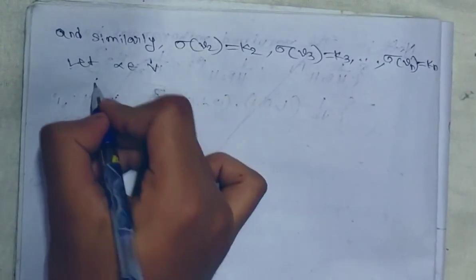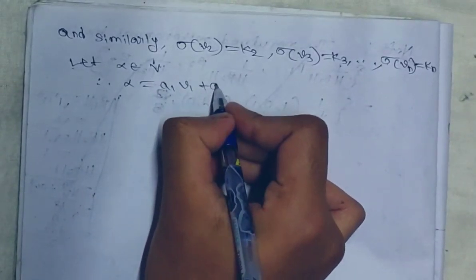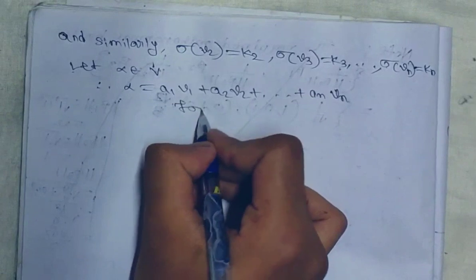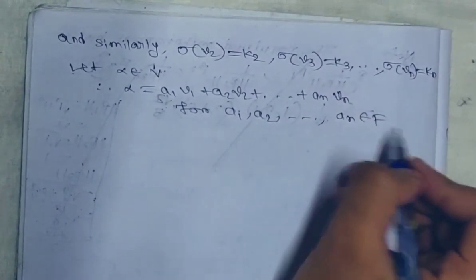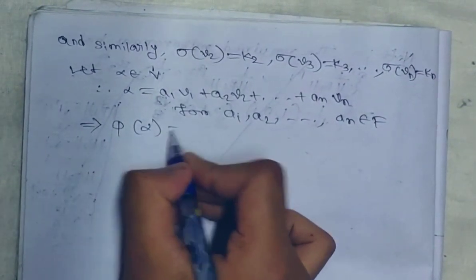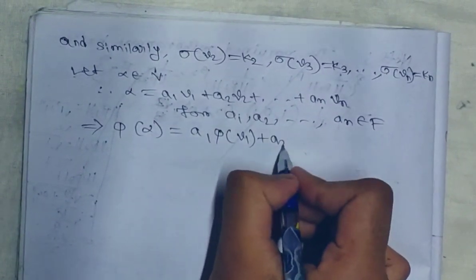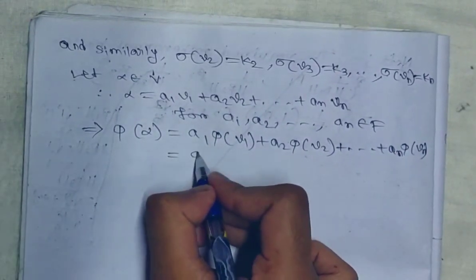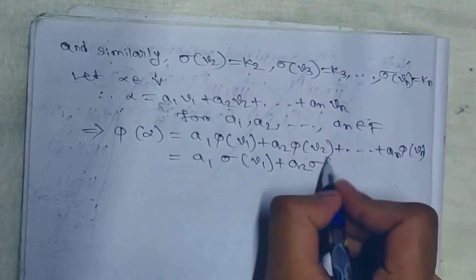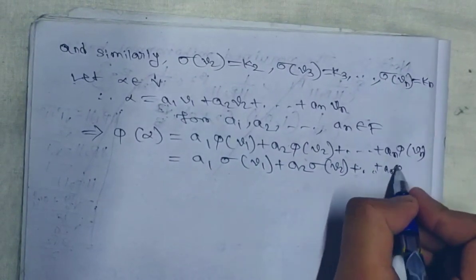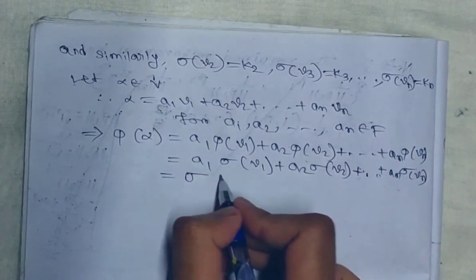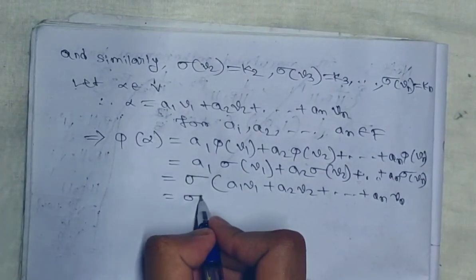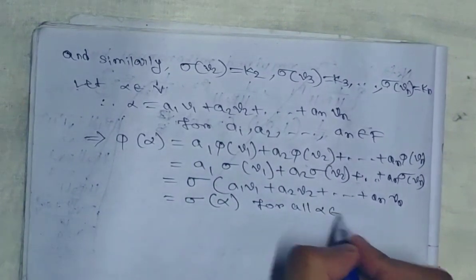Now let α belong to V. Therefore α = a1·V1 + a2·V2 + ... + an·Vn, for a1, a2, ..., an belonging to field F. That implies φ(α) = a1·φ(V1) + a2·φ(V2) + ... + an·φ(Vn) = a1·σ(V1) + a2·σ(V2) + ... + an·σ(Vn) = σ(a1·V1 + a2·V2 + ... + an·Vn) = σ(α), for all α belonging to V.